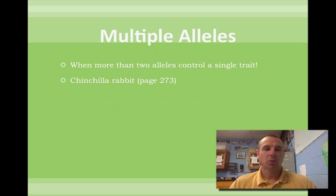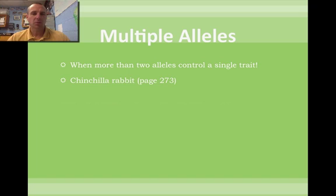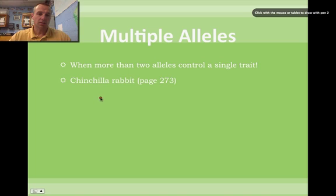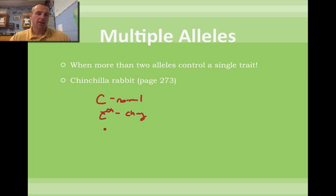The next one is multiple alleles — when more than two alleles control a single trait. We have eye color, blood types, and skin color determined by multiple alleles. There are too many colors for it to be just one allele with only two or three possibilities. The chinchilla bunny rabbit on page 273 shows a picture of this. A normal-looking bunny rabbit has a big C allele; a chinchilla bunny rabbit has a little c with CH; then there's a little c with H, which stands for Himalayan bunny rabbit; and a little c, which stands for albino bunny rabbit.